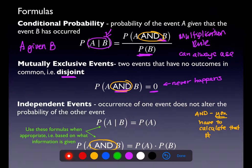When it comes to mutually exclusive and independent events: if I tell you events are mutually exclusive, you get to use that formula. If I ask whether events are mutually exclusive, put a question mark over the equal sign and see if equality holds — if it does, they're mutually exclusive; if not, they're not. The same holds for the independence formulas. If I tell you events are independent, you can use those on top of the addition and multiplication rule. If I ask you to prove or disprove independence, pick one of those formulas and see if equality holds.